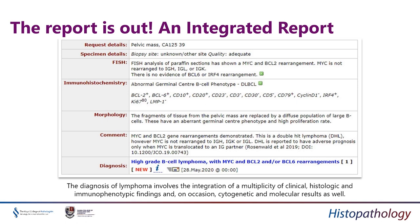Let's start from the endpoint — the final report. When the report is out, it is the final step of each case, which is sent or emailed or passed to the clinician. This is an example of one of our integrated reports from our center. By integrated, I mean it has an element of morphology, which is the microscopy, and the diagnosis, which is essential. Because it's a lymphoma case, we need immunohistochemistry.